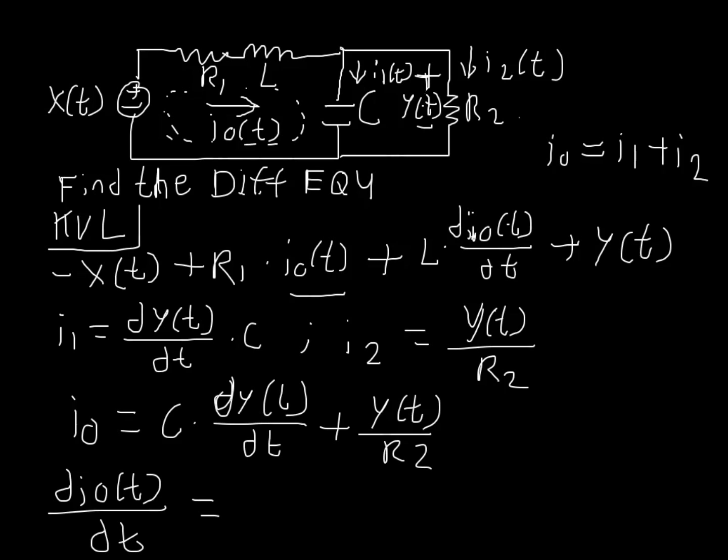c times d squared of y sub t over dt squared, or the second derivative of y with respect to t, and then the derivative of y sub t with respect to t is just simply 1 over r2, just simplifying down our expression a little bit, of dy sub t dt.